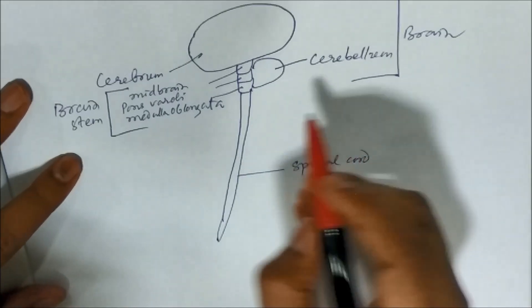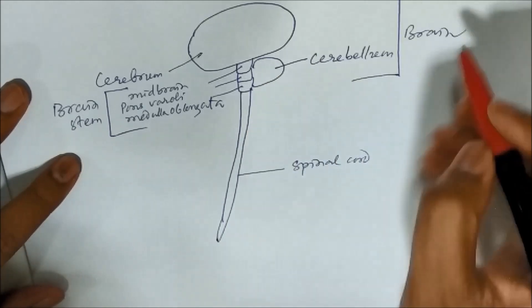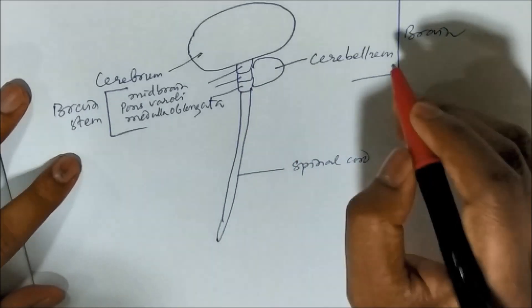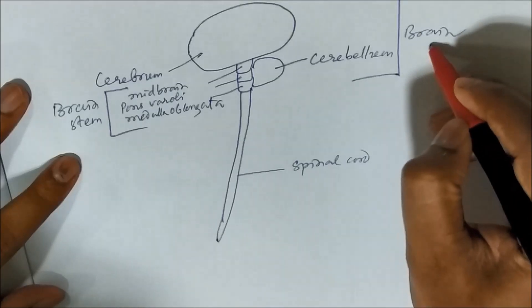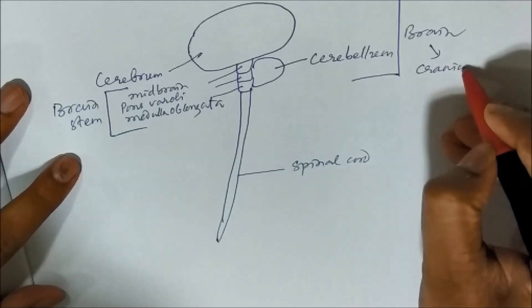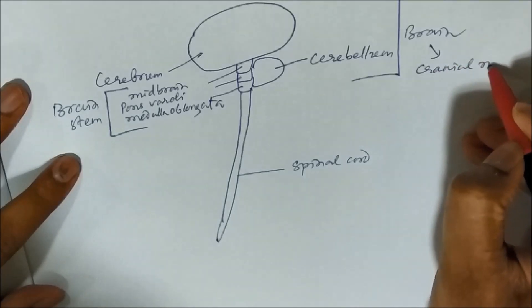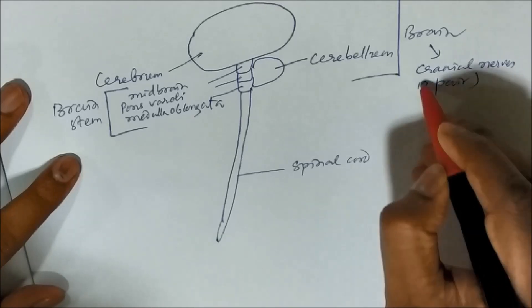And from the central nervous system neurons are passing through and from brain the neurons are called cranial nerves. And these are twelve pair of cranial nerves.